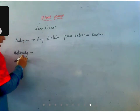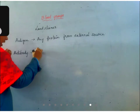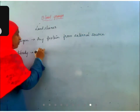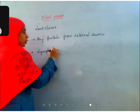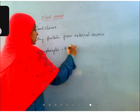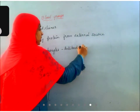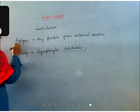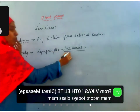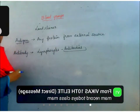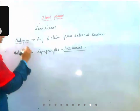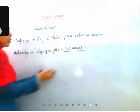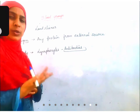Antibodies are produced by lymphocytes — those white blood cells which produce antibodies. These antibodies are produced opposite to the antigen. To kill this antigen, our body produces antibodies. Against every pathogen, our body will produce antibodies.